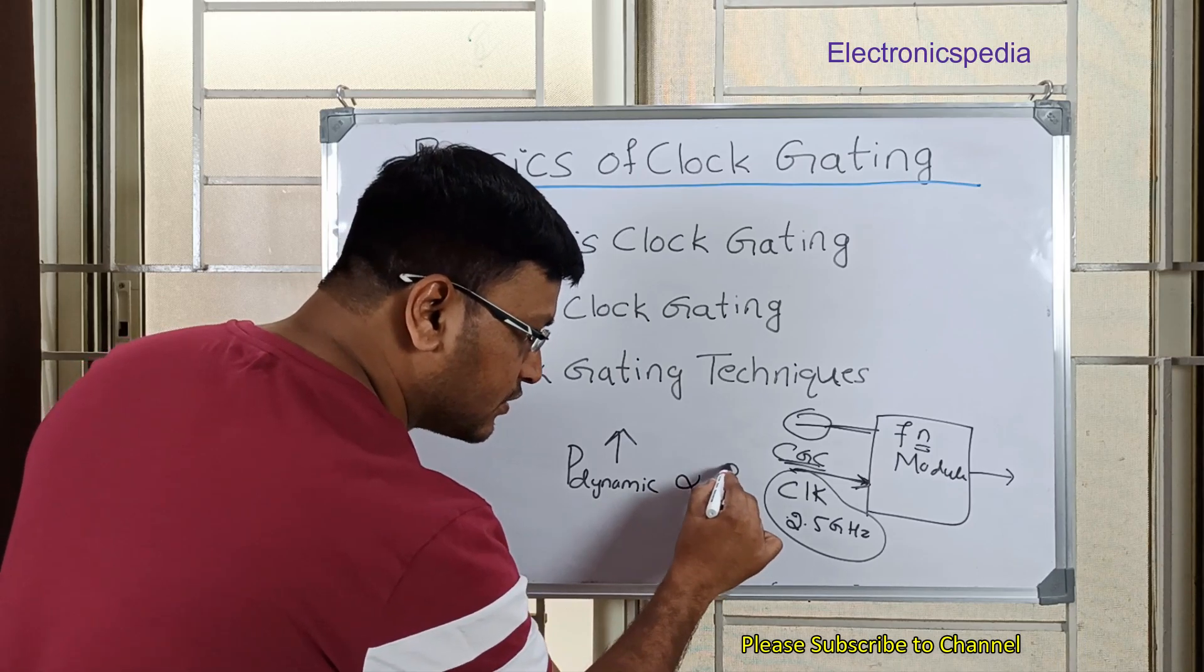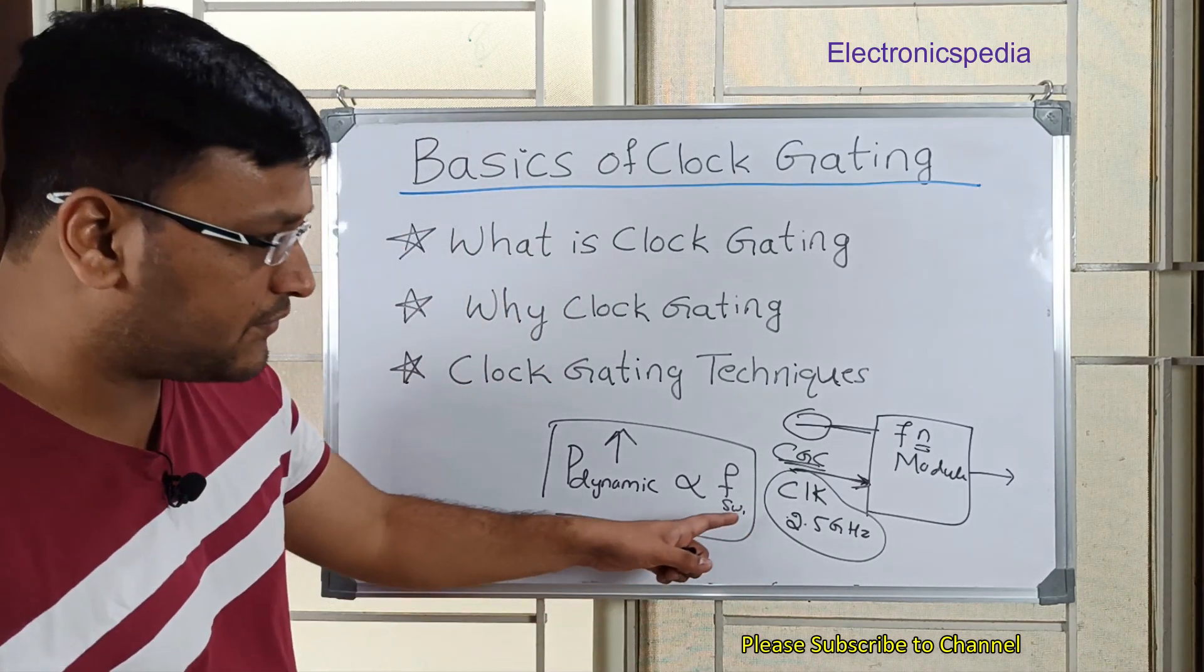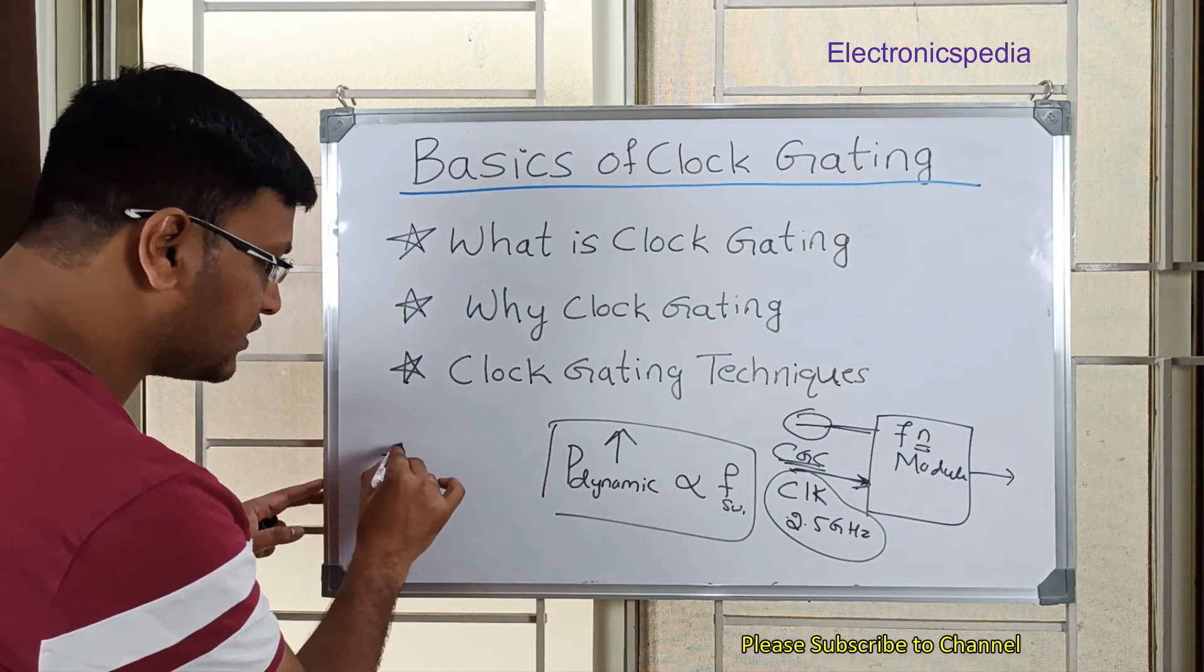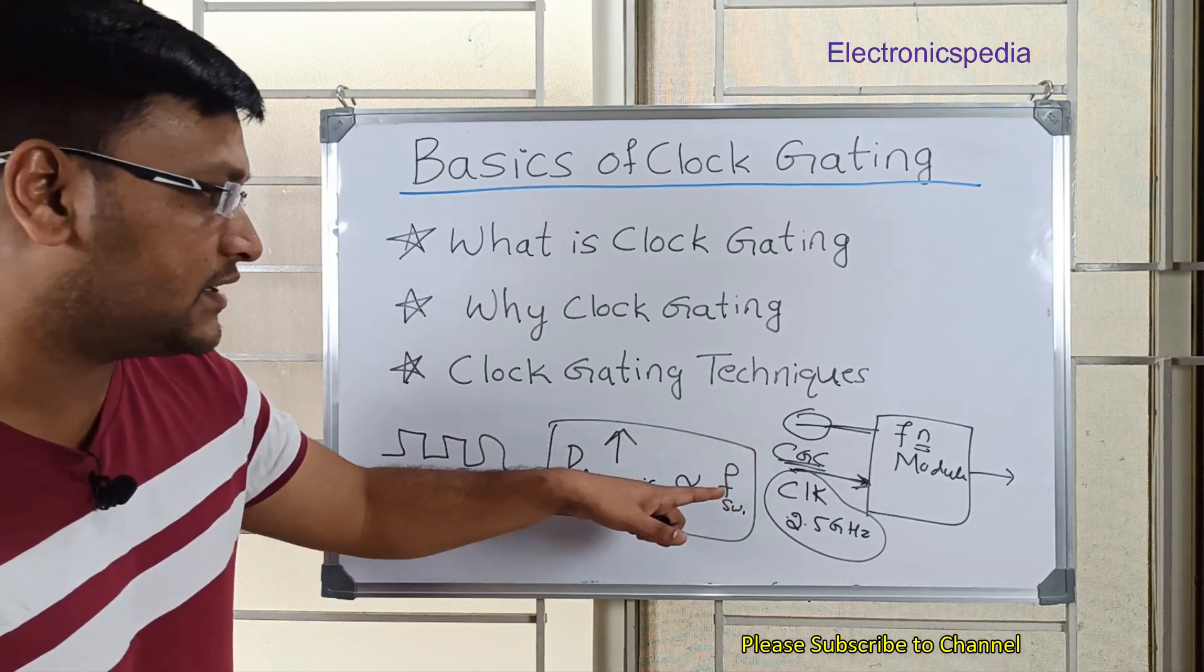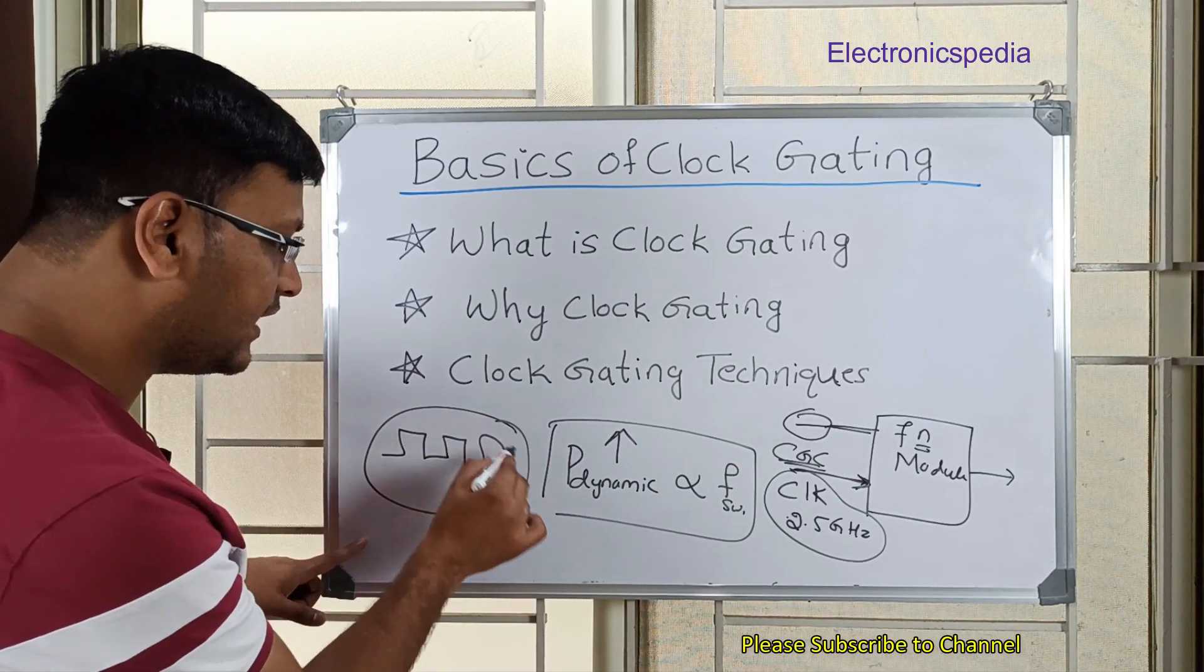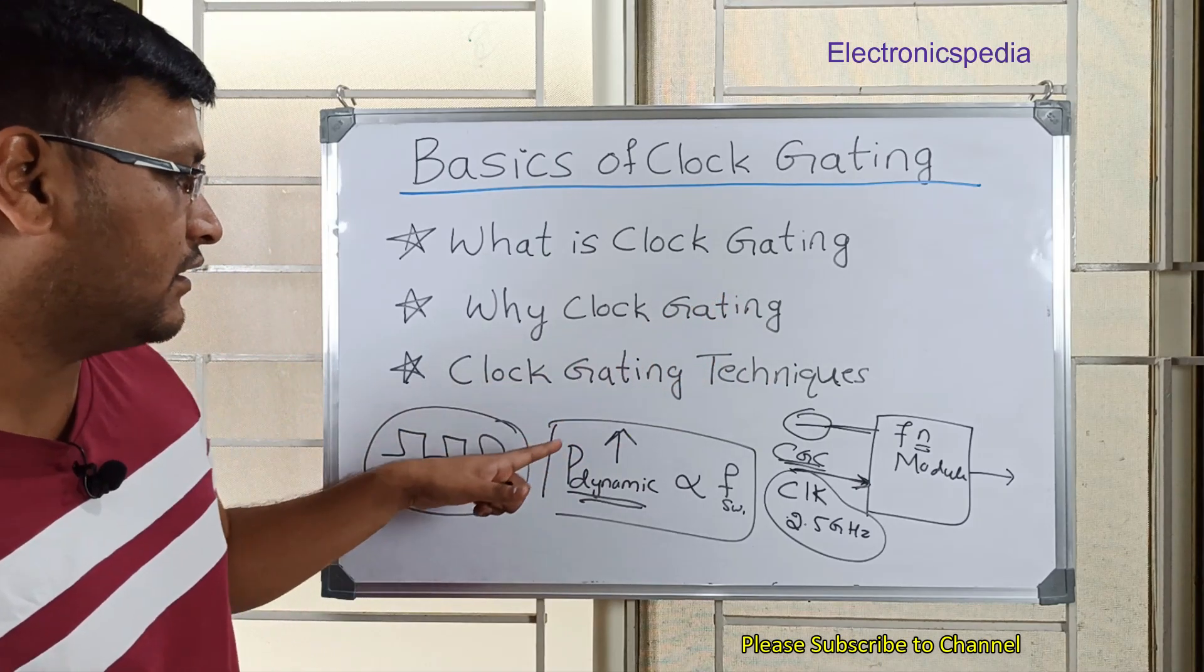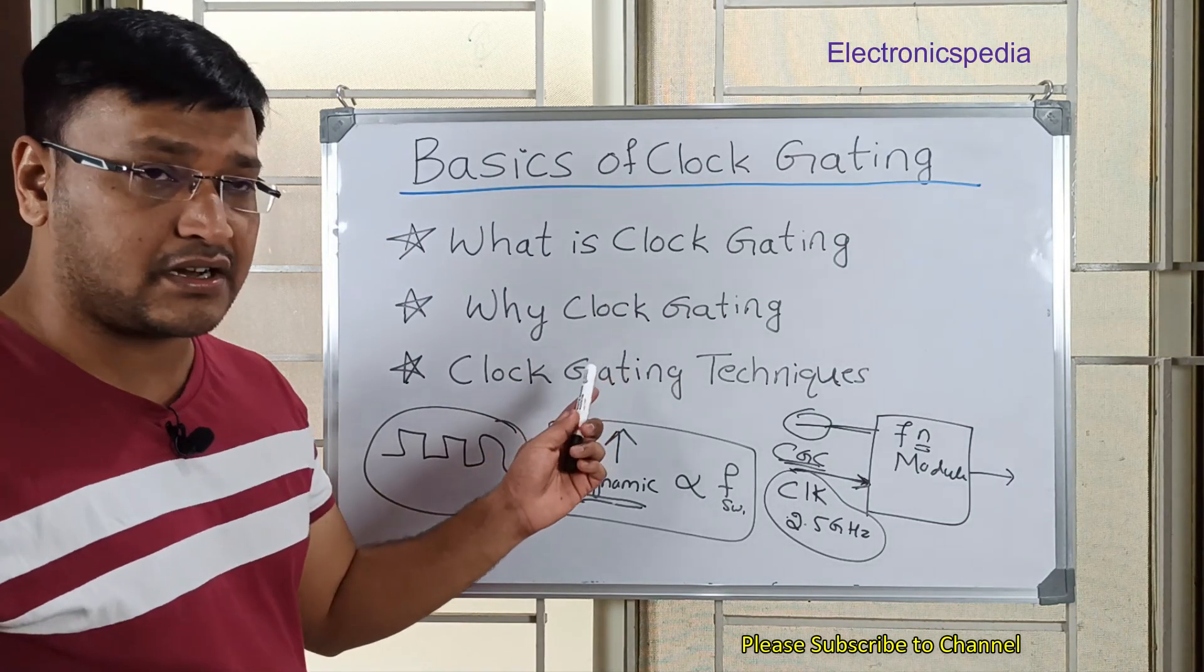Why it increases? Because this dynamic power dissipation is directly proportional to the frequency, the switching frequency. Now what do you mean by switching frequency? Switching frequency is the frequency of the clock which you are providing to this particular block. And if it is continuous, the clock will be continuously toggling, right? Like 0, 1, 0, 1 like this. So because of this, the module is running continuously and it leads to dynamic power dissipation. That's why we try to gate off this clock so that you reduce this dynamic power dissipation.